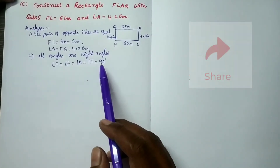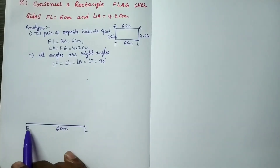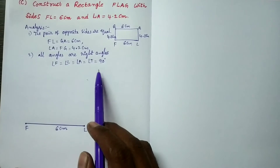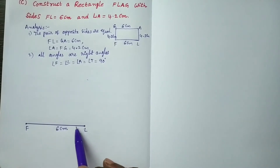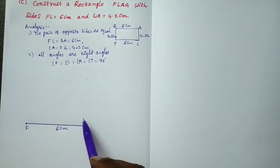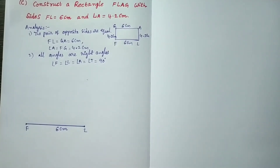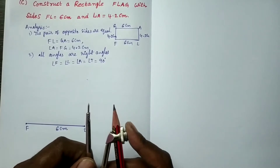Now let us go to construct the rectangle flag — the original diagram. Draw a line segment FL equal to 6 centimeters. Now we have to construct an angle of 90 degrees at F or at L — I preferred at L. Construct 90 degrees. 90 degrees is a standard angle, so we can construct it without using a protractor. Standard angles can be constructed without a protractor. Take some radius with the compass.